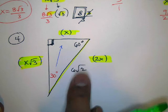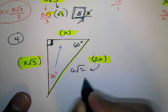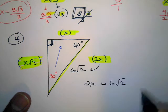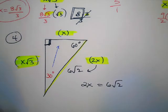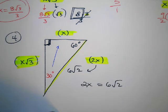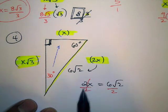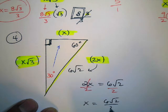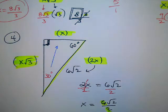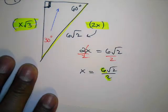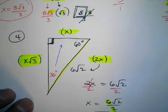The only side you can start with is the one with a given measure. You can't solve without a number, so work with what's given — and that's why labeling correctly matters. Here, 2x equals 6√2. Divide by 2: x equals 6√2 over 2. Always check if it can be reduced — 6 divided by 2 is 3, so the value of x is 3√2.